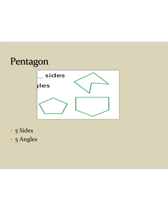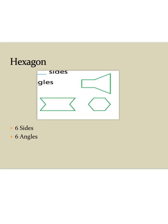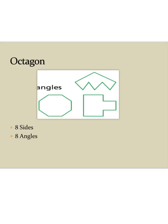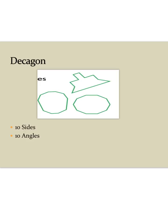A pentagon has five sides and five angles. A hexagon has six sides and six angles. An octagon has eight sides and eight angles. A decagon has ten sides and ten angles.